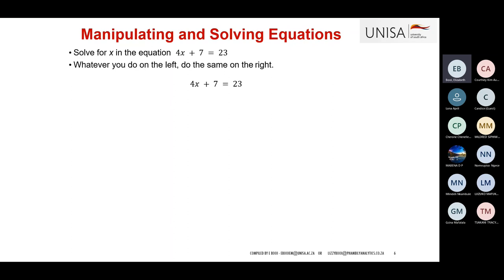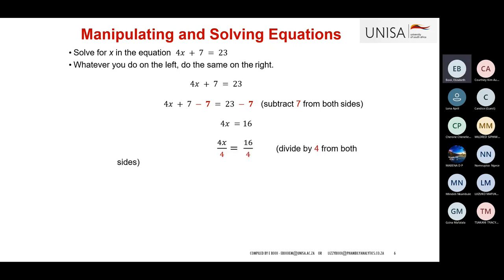To solve 4x + 7 = 23 for x, I need to get rid of 7. I subtract 7 from both sides: 7 minus 7 equals zero, leaving 4x on the left and 23 minus 7 equals 16 on the right. Now 4 is multiplying x, so I divide both sides by 4. Four and four cancel out, leaving x = 4.